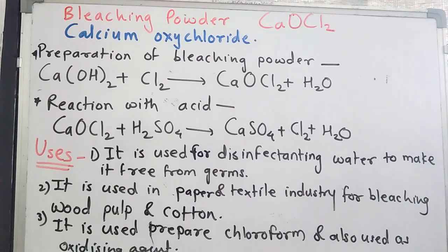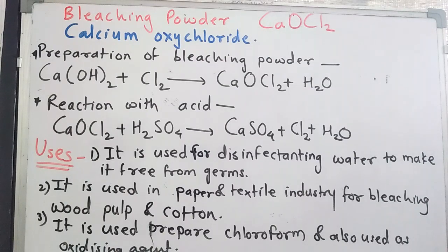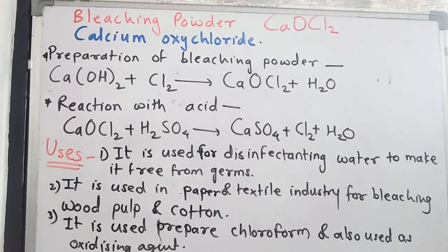Bleaching powder is used for bleaching action in the paper industry, where paper is made from wood pulp and bleached to make it more whitish. It is also used for bleaching cotton in the textile industry. Additionally, it is used to prepare chloroform, which is an anesthetic agent, and as an oxidizing agent — a substance that provides oxygen. It is also used to make wool unshrinkable.